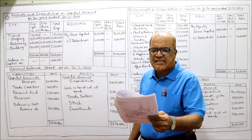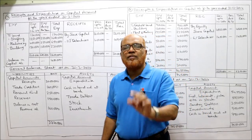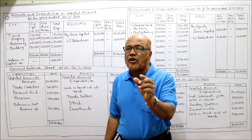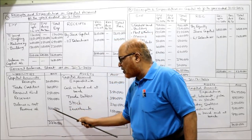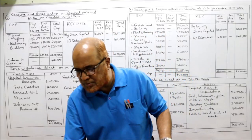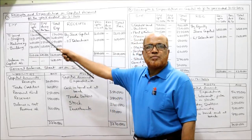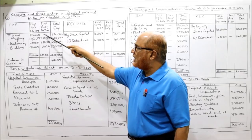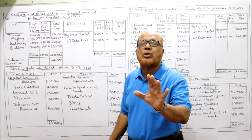The balancing item of 1 lakh 60 thousand may be taken as the profit of the company, which will be transferred to the net revenue account (not called profit and loss account). Now we find the total expenditure side: beginning of the year 20 lakh, during the year 6 lakh added, end of the year total expenditure 26 lakh.